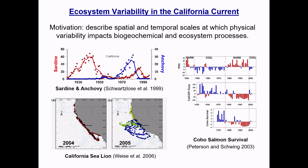The first example is the low frequency variability in sardine and anchovy populations documented for the California Current region and other upwelling systems. Can we reproduce this and understand the fundamental mechanisms that lead to that low frequency variability?